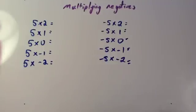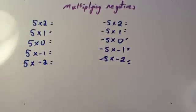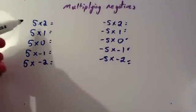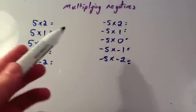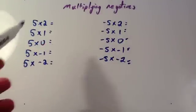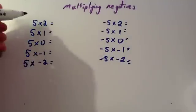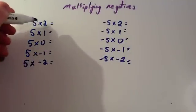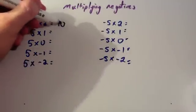We're now going to look at multiplying numbers, including multiplying negatives and positives together, negatives by negatives, etc. Whenever I introduce multiplying negatives, I like to look at this little pattern. So, 5 times 2 is obviously 10.